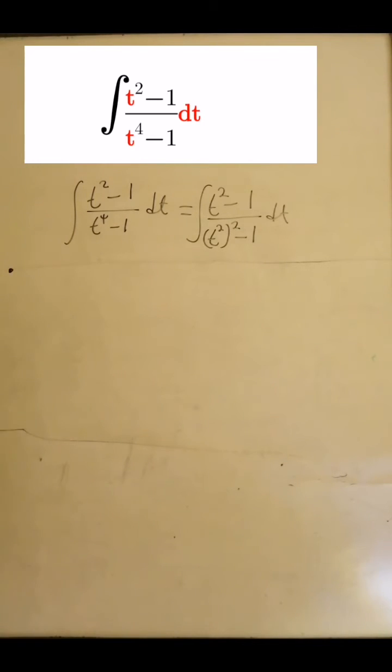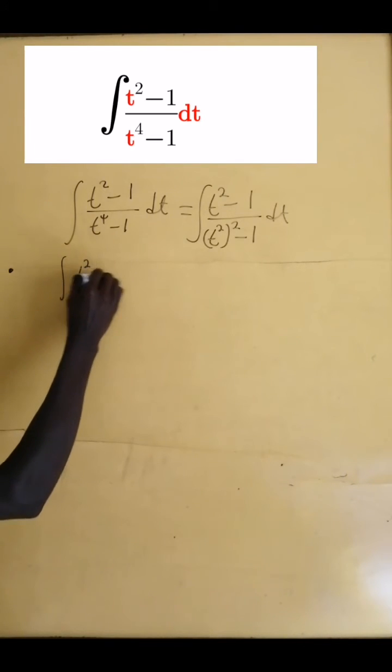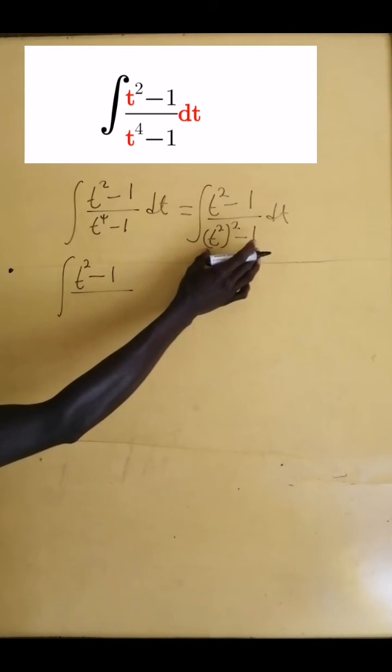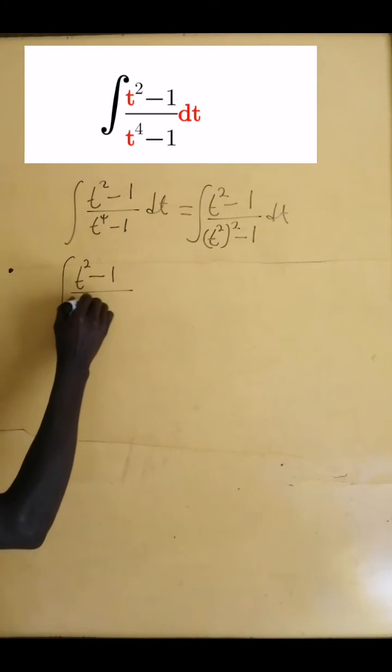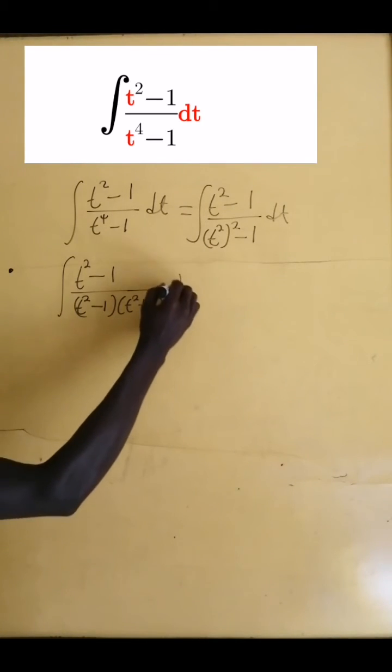And we are good to go because t squared all squared minus 1 represents the difference of two squares. So we have the integral t squared minus 1 all divided by t squared minus 1 times t squared plus 1 dt.